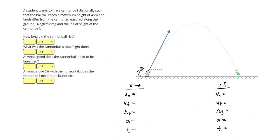Let's take a look at one more problem since these are tricky. In this problem, a student wants to fire a cannonball diagonally such that the ball will reach a maximum height of 45 meters and land 69 meters from the cannon, measured along the ground. In this one, we're going to work backwards. So that maximum height of 45 meters is measured up and down, so that is going to be my vertical displacement.